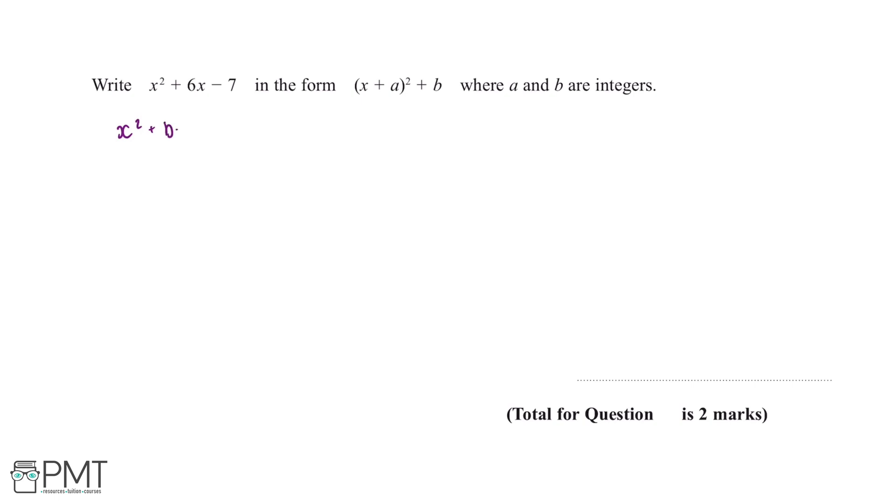This is called completing the square, and the general formula for an equation in this form is x plus b over 2 squared minus b over 2 squared plus c. This may look complicated at first, but it's easier to see when we do the question.